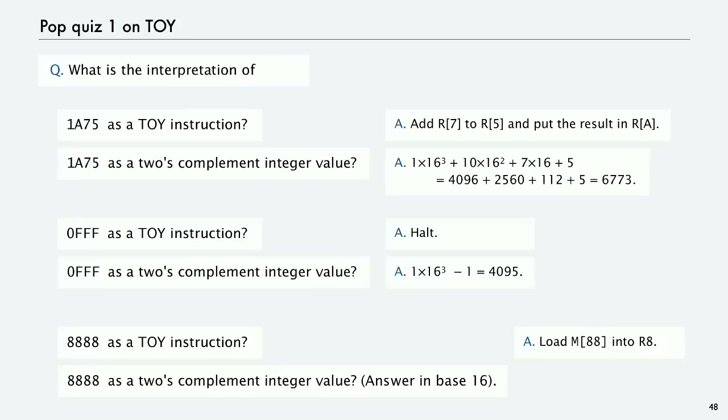But actually, the idea of flipping all the bits and adding 1 works in any number system. And so actually, you get this by subtracting all from 15 and then adding 1 less than the base. So these types of questions are short answer questions that you might find in a quiz or an exam on this material. You want to be able to know what every 16-bit value means as a TOY instruction or as a data value.